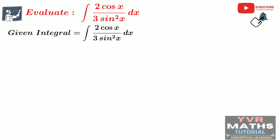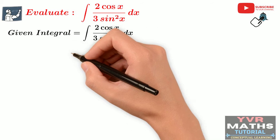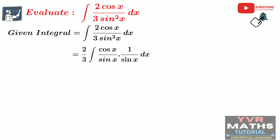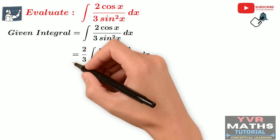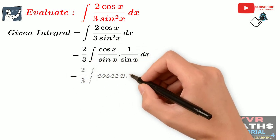In the given integrand, we have two trigonometric functions on the numerator cos x and on the denominator sin²x. So I am going to take the combination cos x by sin x and another one 1 by sin x. That means the integrand I am going to write as cos x by sin x into 1 by sin x. So we get 2 by 3 into integral of cos x by sin x into 1 by sin x dx. By using basics of trigonometry, cos x by sin x can be written as cot x and 1 by sin x can be written as cosecant x.